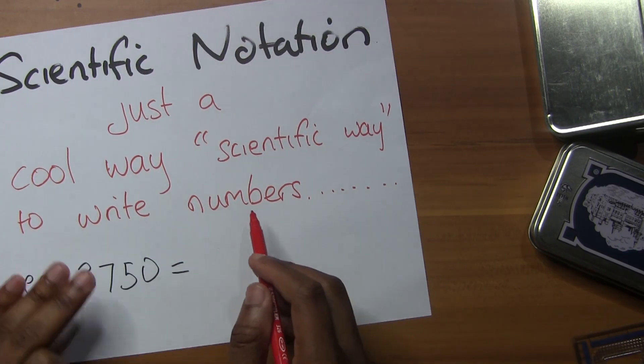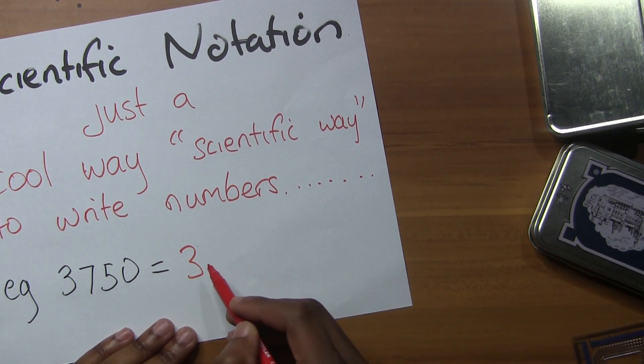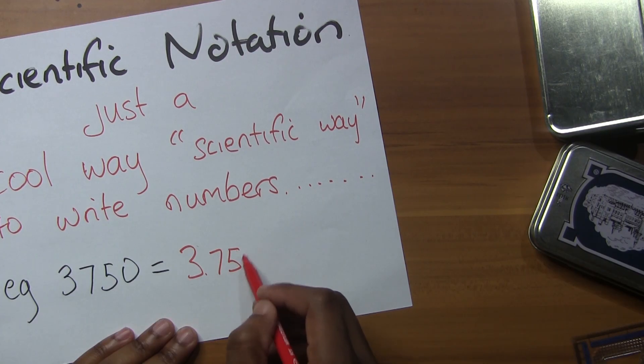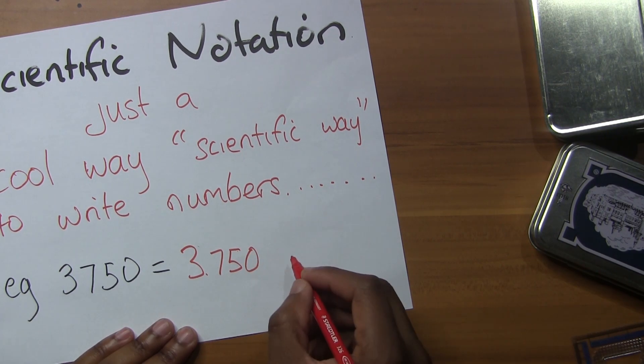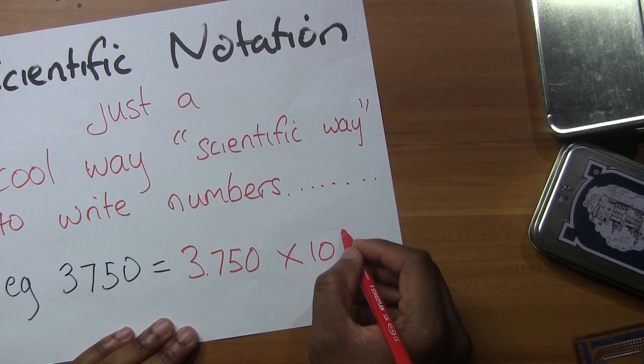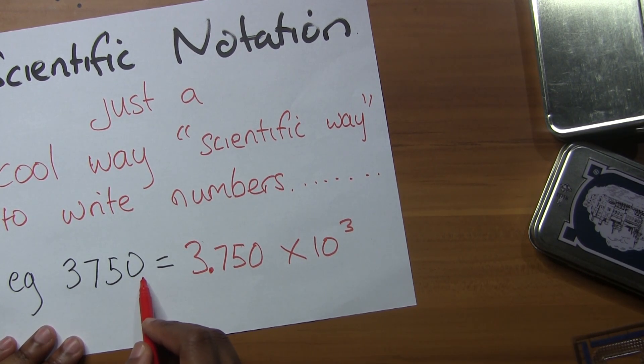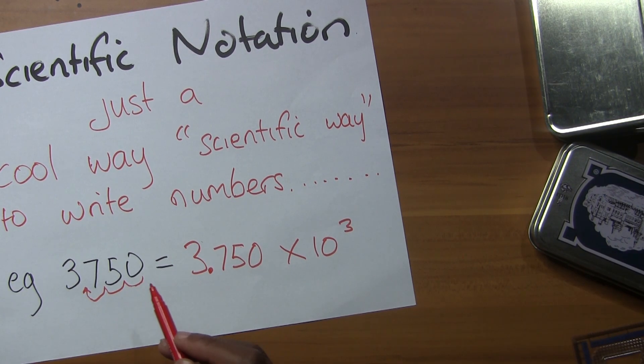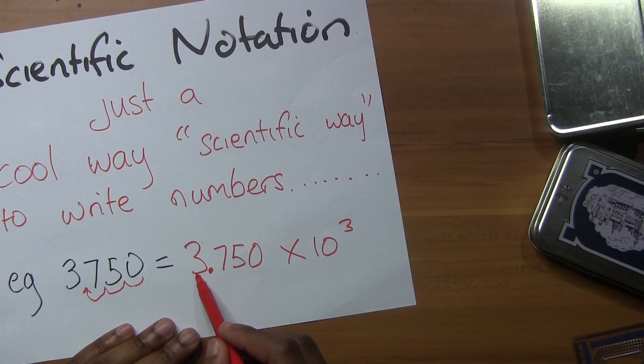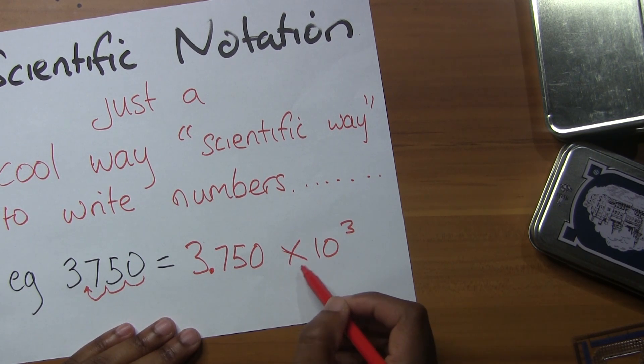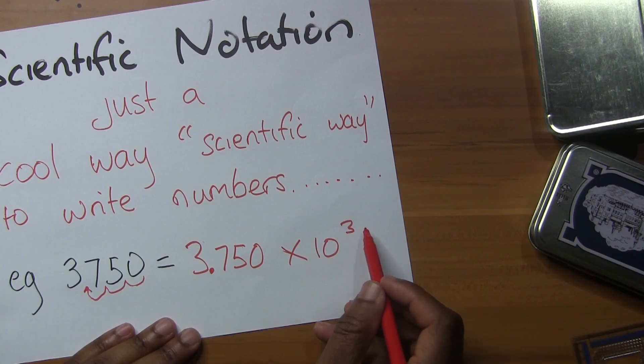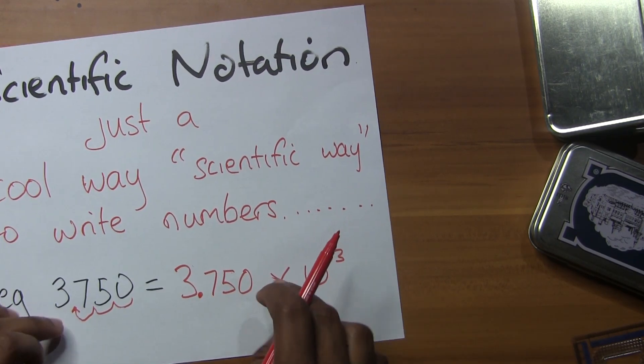For example, 3750 in scientific notation will be 3.75 × 10³. What happened? The decimal point was here, and I moved it so that I get a number between 1 and 10 - like 3.75. Then I multiply by 10 to the power of how many times I moved the point. So 3750 and 3.75 × 10³ are really equal; it's just a different way of writing the number.